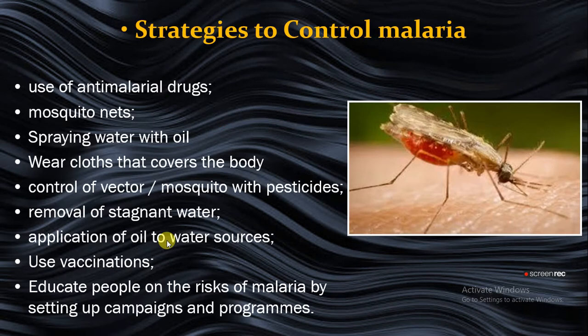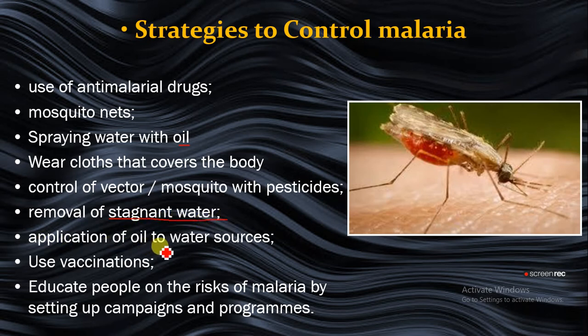Strategies to control malaria include: use of anti-malaria drugs, mosquito nets, spraying water with oil — which reduces the amount of oxygen able to penetrate the water, thereby disrupting the formation of mosquitoes — wearing clothes that cover the whole body when sleeping, control of vectors and mosquitoes with pesticides, removal of stagnant water so there is no breeding point for mosquitoes, and application of oil to water sources.